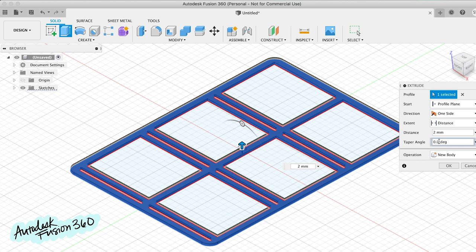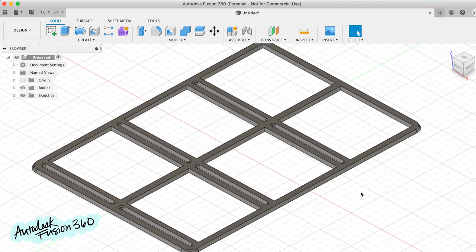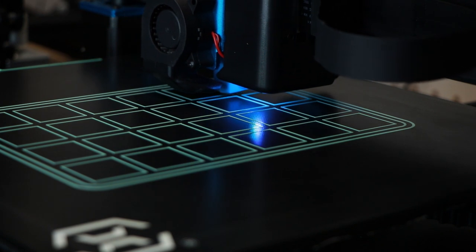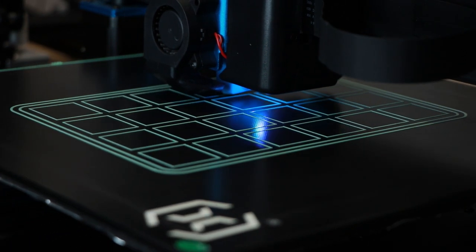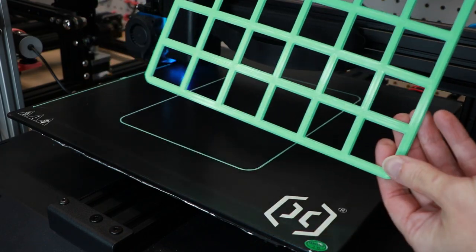Once imported, I did a 2mm extrude with a negative 30 degree taper. And that gave me a nice bevel on all the edges in one operation. Then I sliced the models in Cura and 3D printed them on my Artillery Sidewinder. And they turned out great!